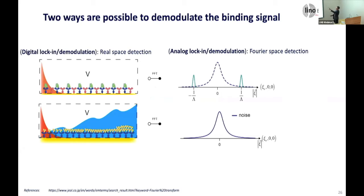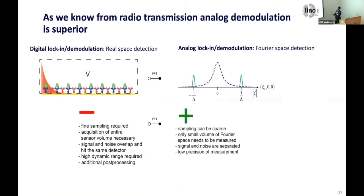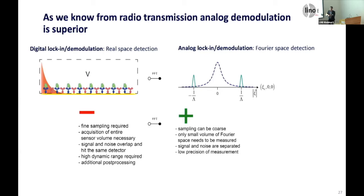We can detect the signal in real space, or we can go to Fourier space where everything is separated. Detecting the signal in Fourier space has significant advantages because noise is separated from signal, sampling can be coarse, and measurement precision requirements are lower. In contrast, if you work in real space you need fine sampling, acquire the entire sensing volume, signal and noise hit the same detector, you need high dynamic range, and at the end you must deconvolve the two.